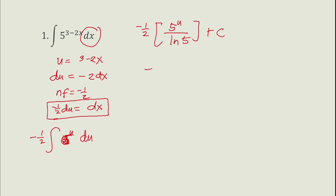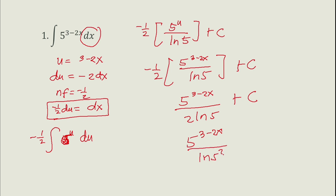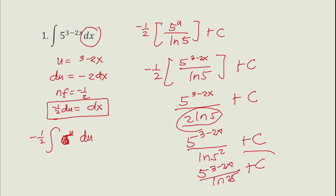Substituting back u = 3 minus 2x, we get negative one half times 5^(3 minus 2x) over ln(5) plus c. By the laws of logarithms, this simplifies to negative 5^(3 minus 2x) over ln(25) plus c. This is the final answer for number one — note the negative sign.